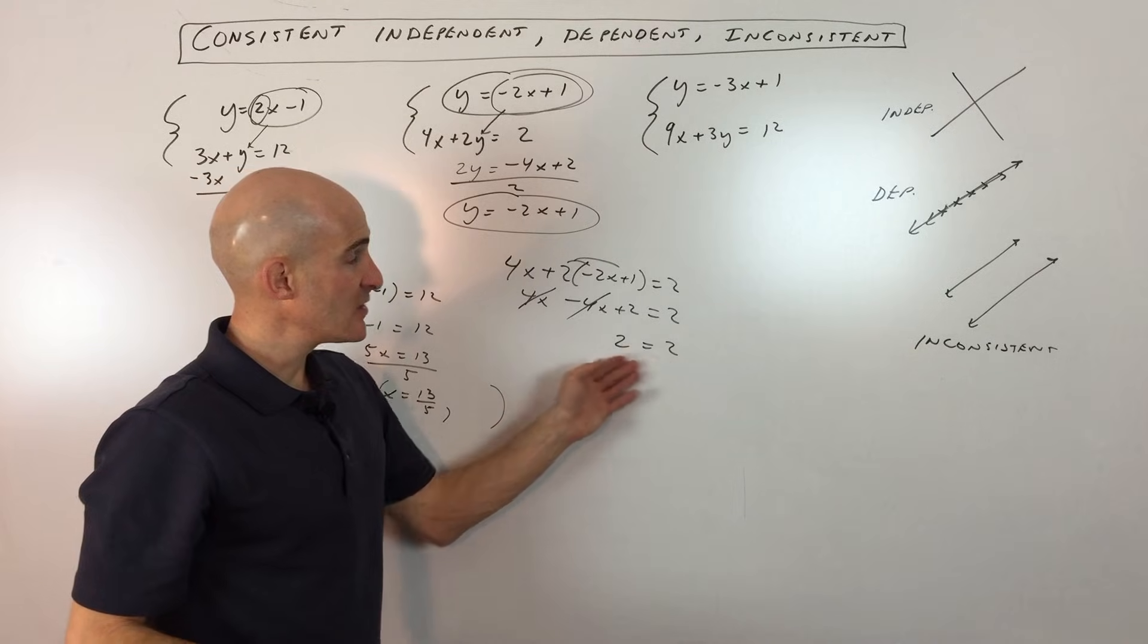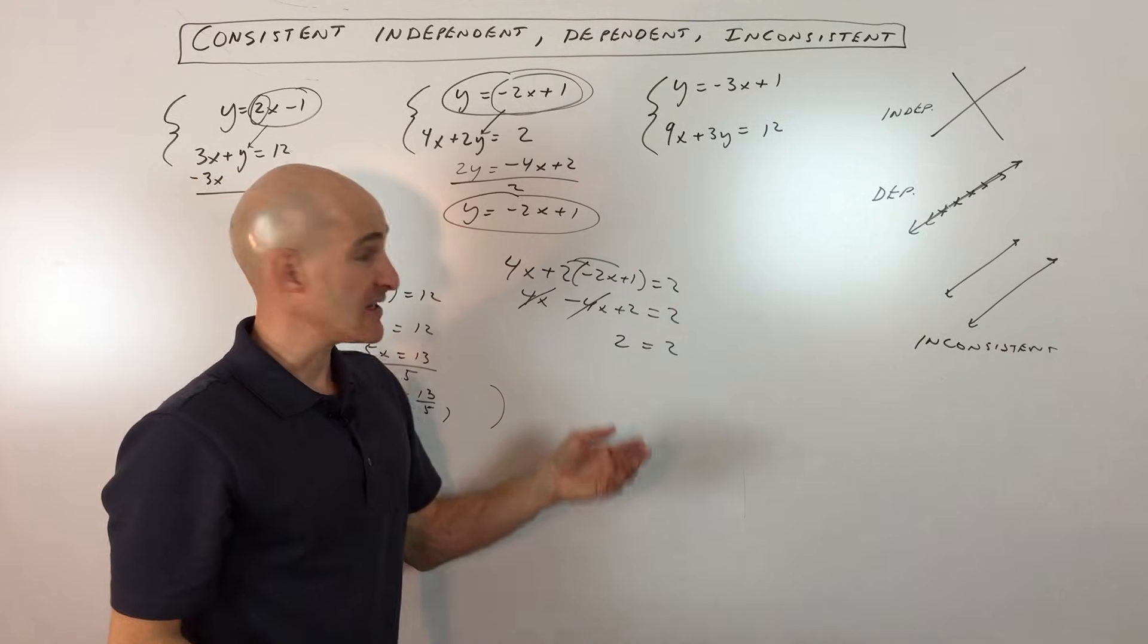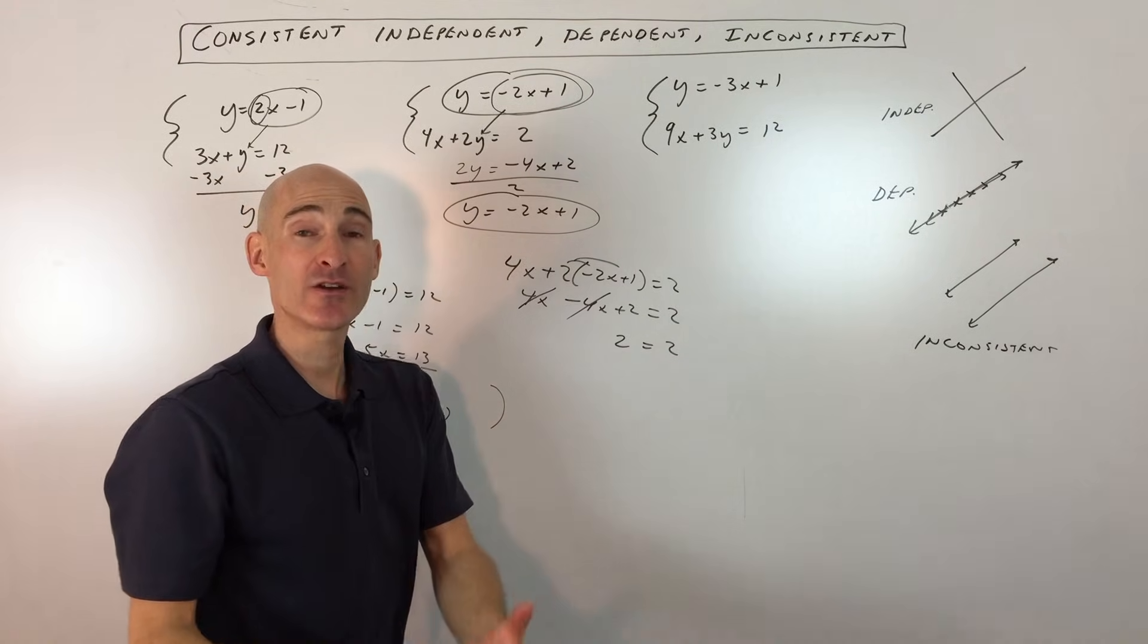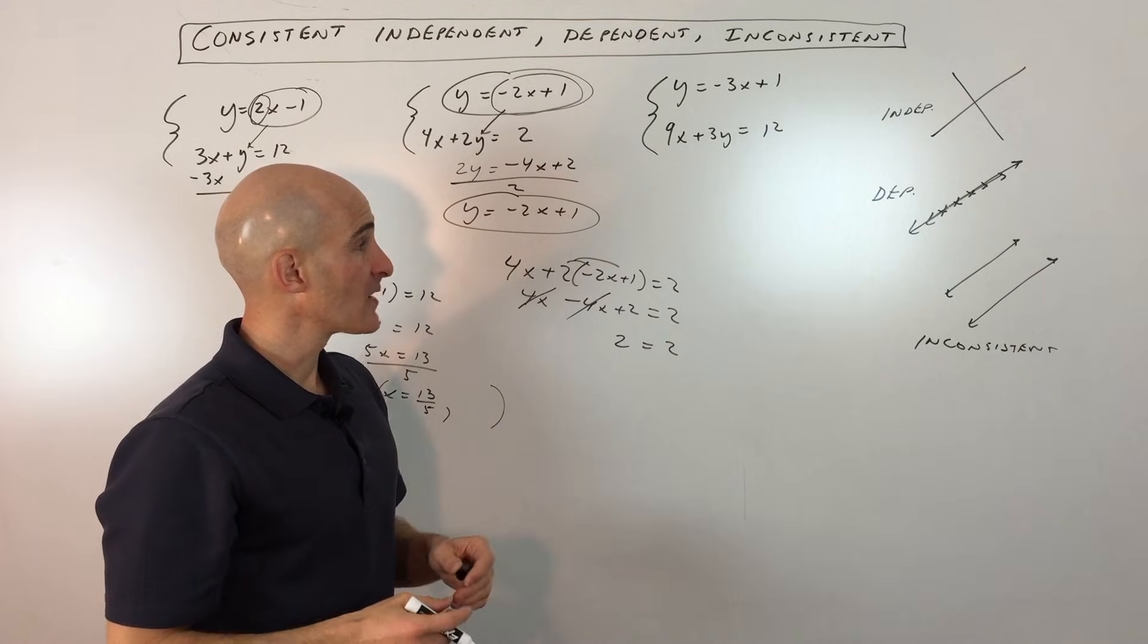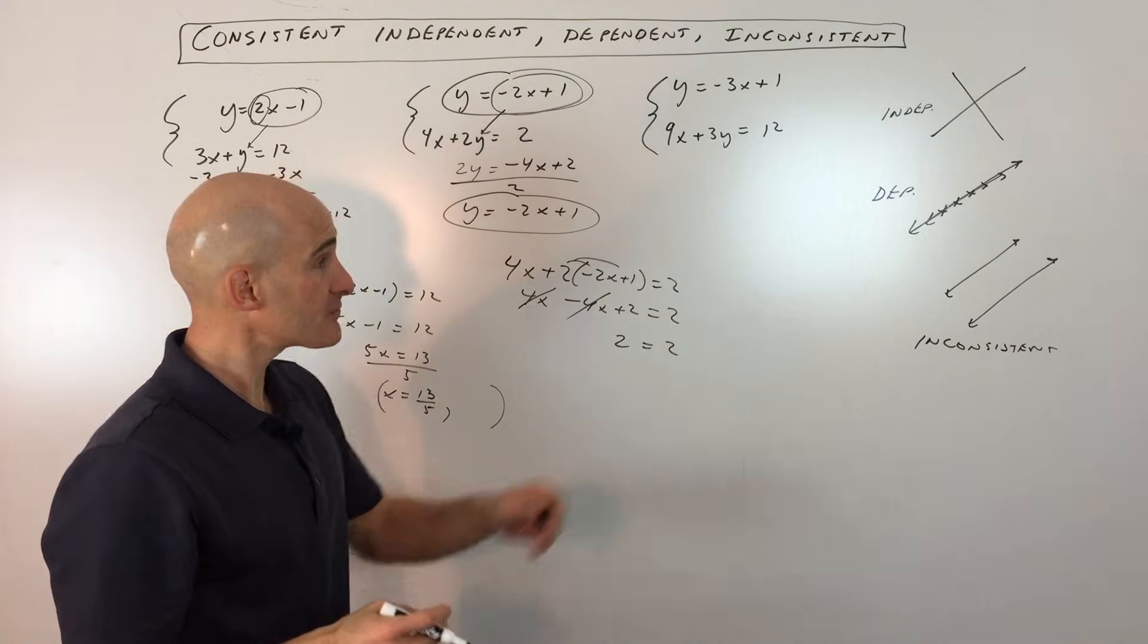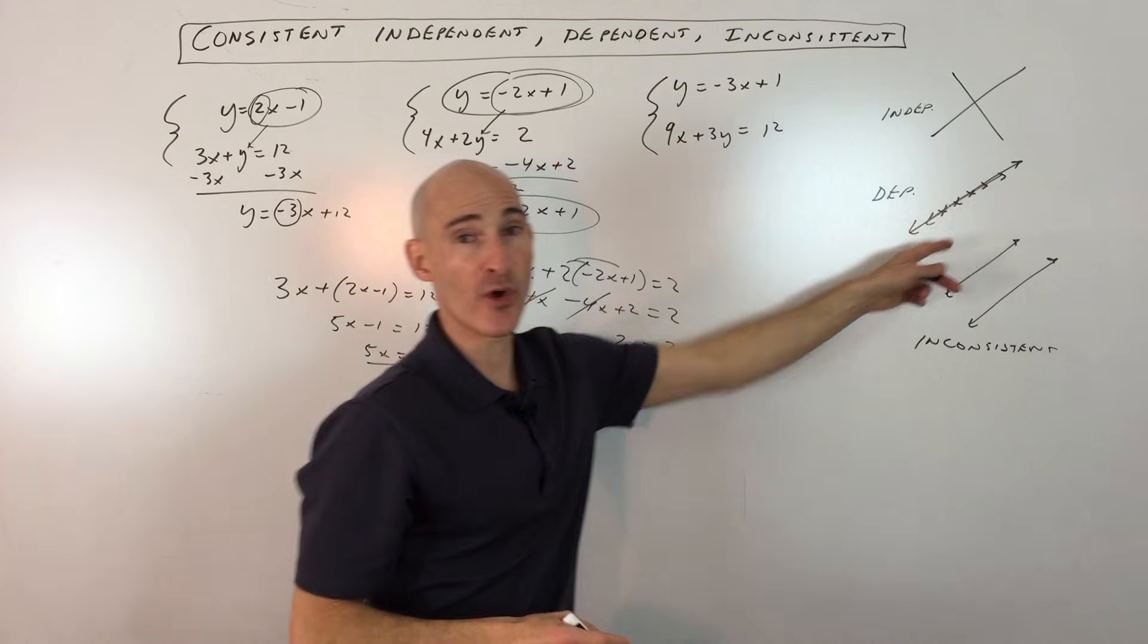Now, when you get the same thing that equals the same thing, that's called an identity. It means that the left side and the right side are identical. And what that means is that these two lines are exactly the same. So they're going to be crossing at an infinite number of points.